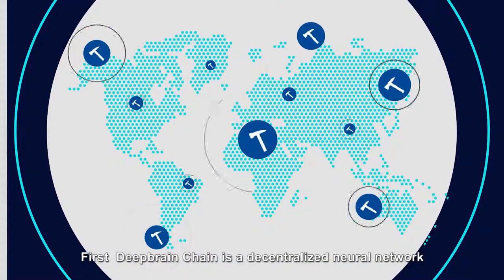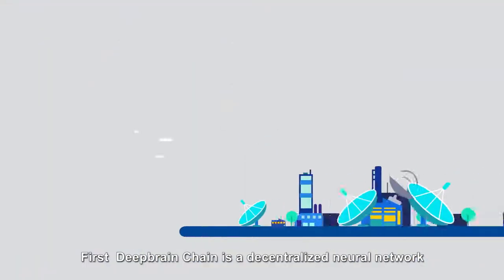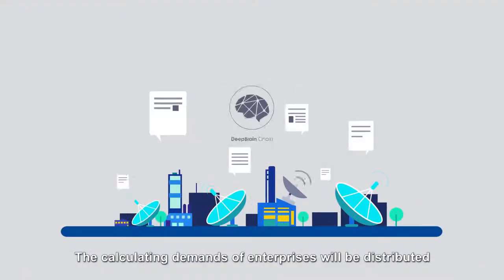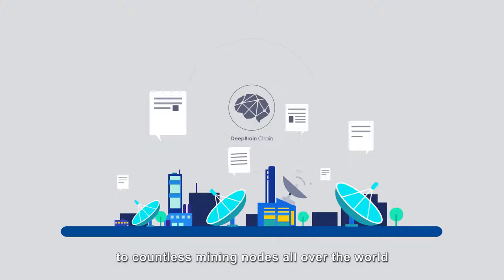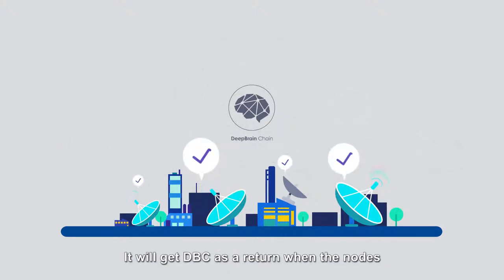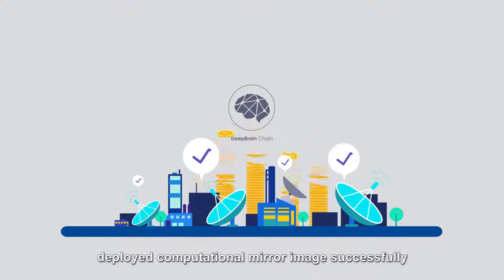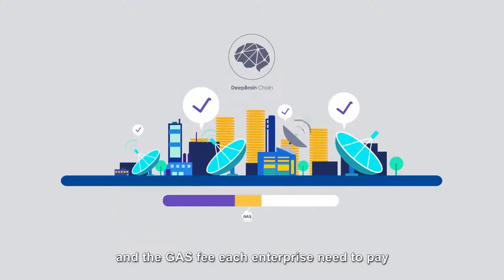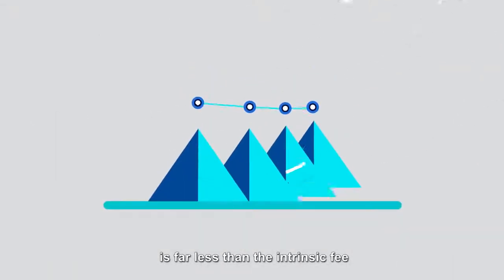First, DeepBrain Chain is a decentralized neural network. The calculating demands of enterprises will be distributed to countless mining nodes all over the world. It will get DBC as a return when the nodes deploy computational miner image successfully. And the GAS fee each enterprise needs to pay is far less than the intrinsic fee.